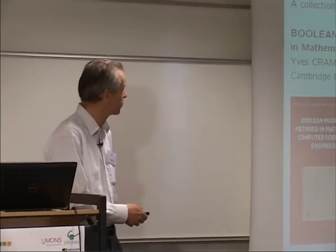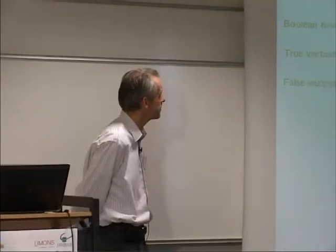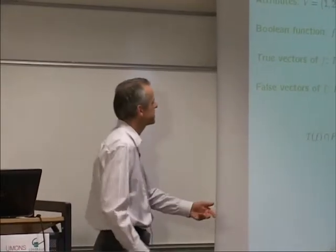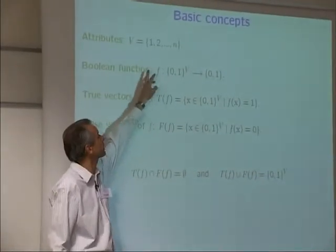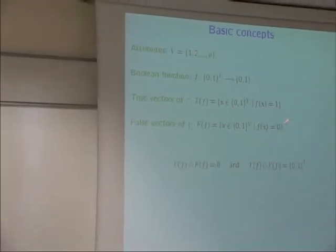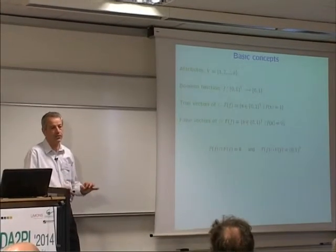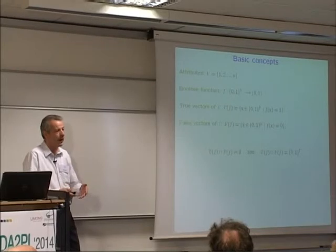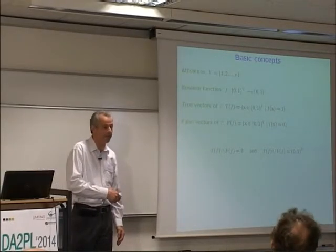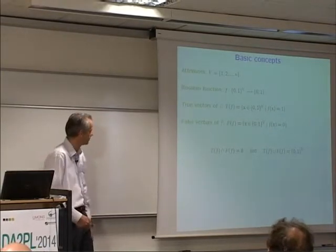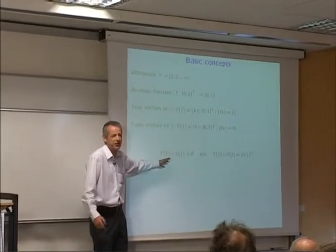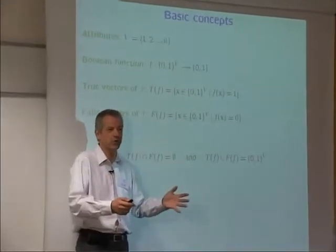What I want to do today is focus on one special type of model. Let me set up some terminology and notation. I will be interested in Boolean functions on n variables. The function takes value 0 or 1. I will denote by T(f) the set of true points or true vectors of the function — the points where it takes value 1 — and F(f) the set of false vectors, where the function takes value 0. For a Boolean function, these two sets are disjoint and they cover the whole Boolean cube.